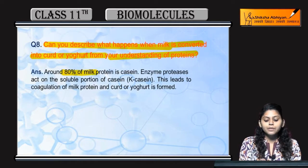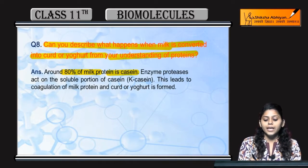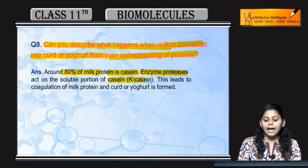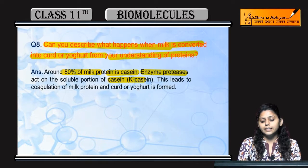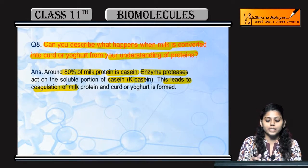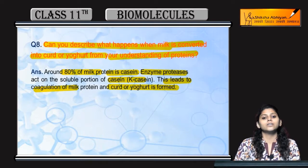So, 80% of the milk contains the protein casein. Now, the enzyme protease acts on casein and leads to the coagulation of those milk proteins, which results in the formation of curd and yogurt.